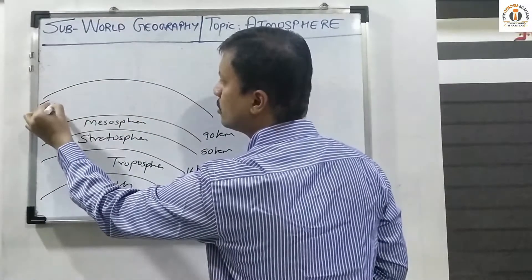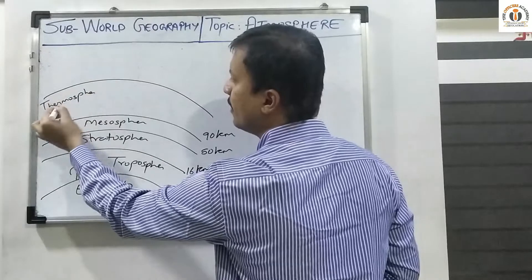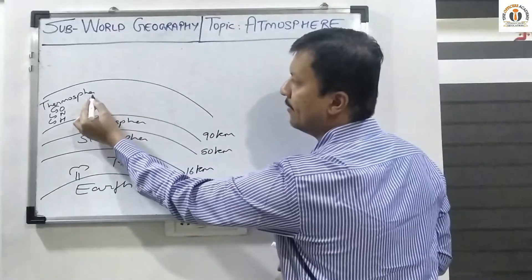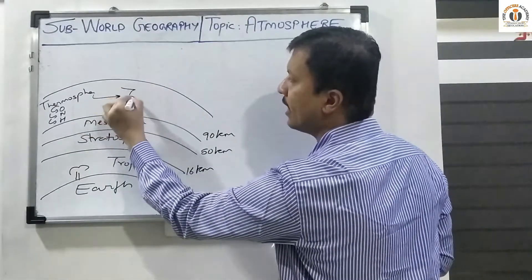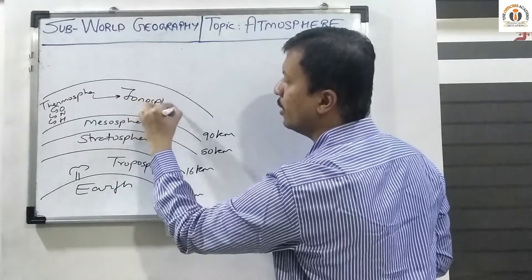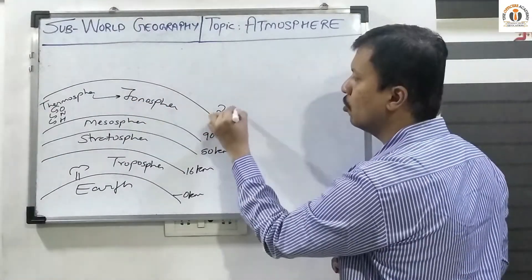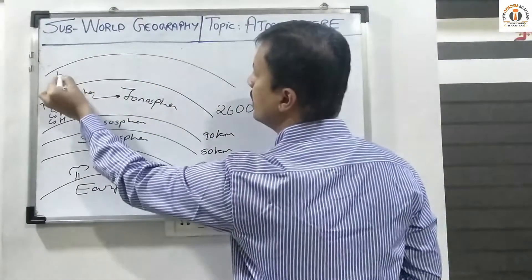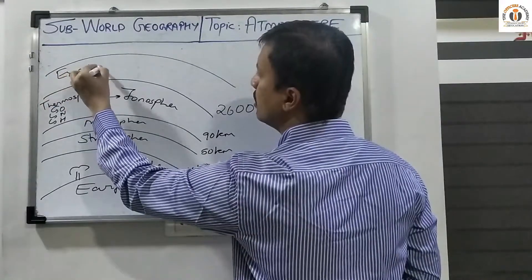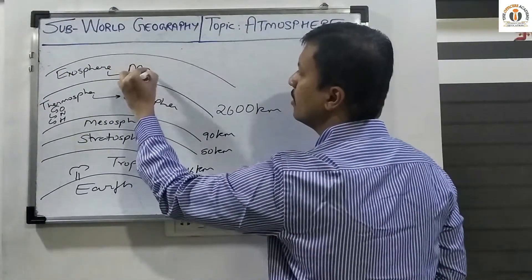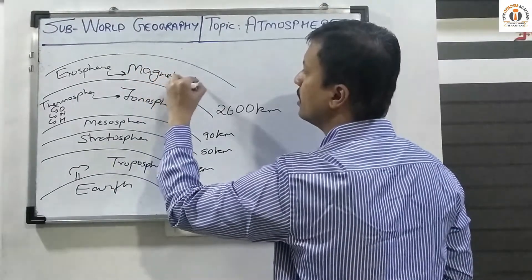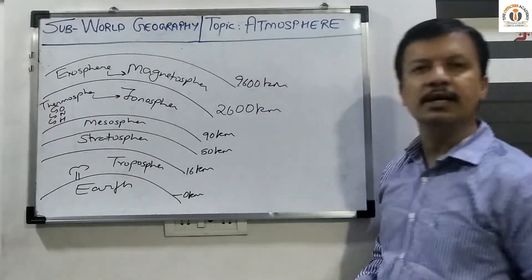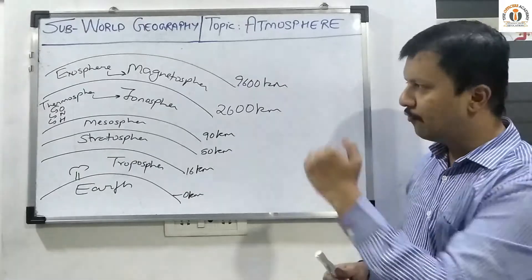The next layer is called the thermosphere. In the thermosphere we have different bands of oxygen, nitrogen, hydrogen, and helium. The height of the thermosphere reaches up to 2600 kilometers. Above that is the exosphere, and within the exosphere lies the magnetosphere, which reaches up to 9600 kilometers.